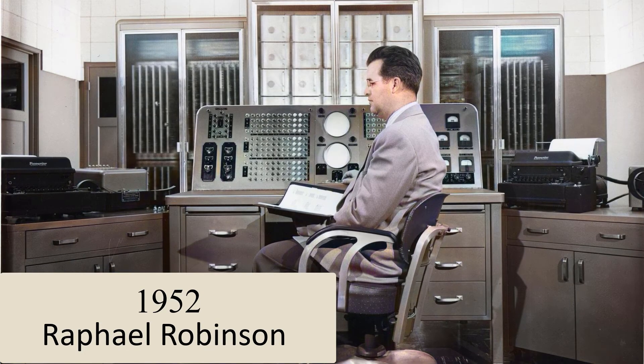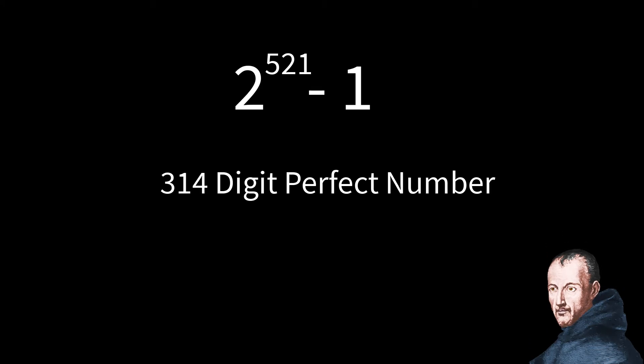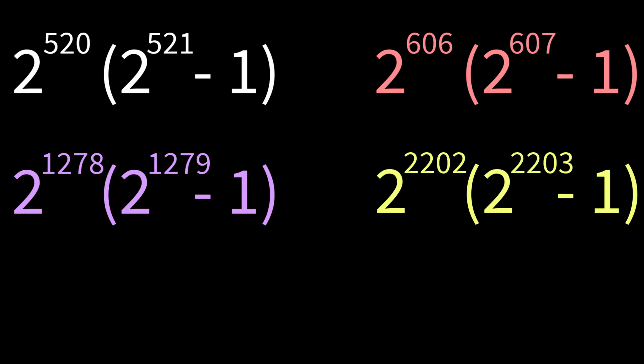76 years passed before Raphael Robinson used an early digital computer to find 5 further Mersenne primes. These generated 5 perfect numbers.